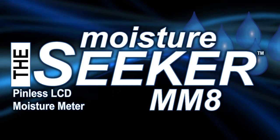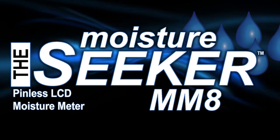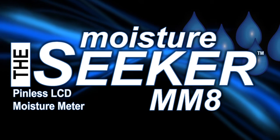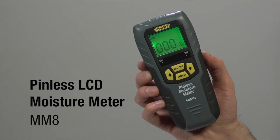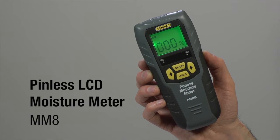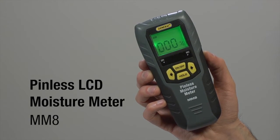General Tools and Instruments Pinless LCD Moisture Meter with Tri-Color Bar Graph, Model MM8. This non-invasive instrument detects moisture up to three-quarters of an inch below the surface of wallboard, masonry, hardwood and softwood.